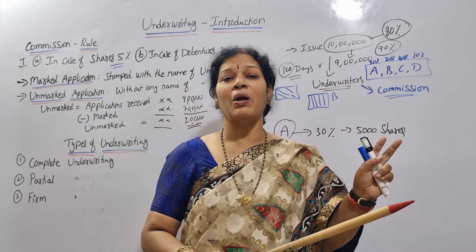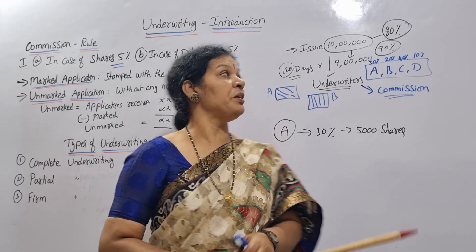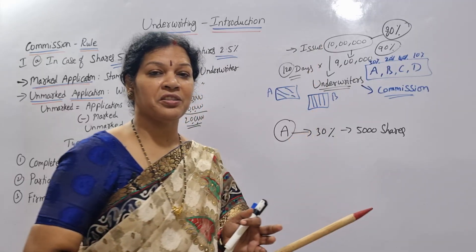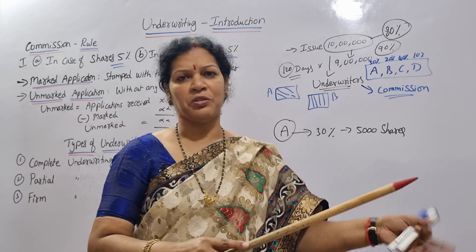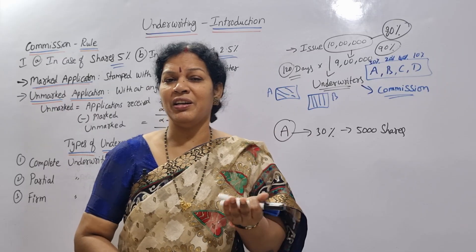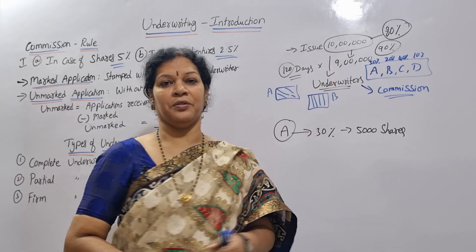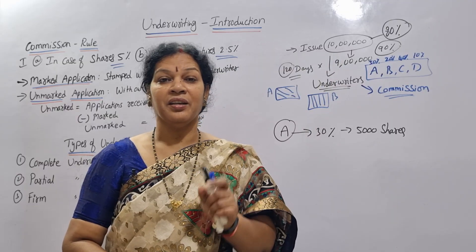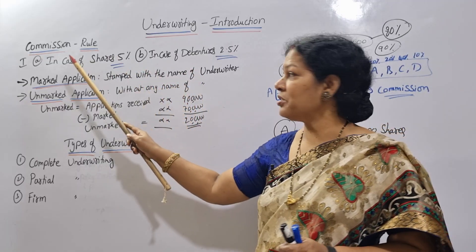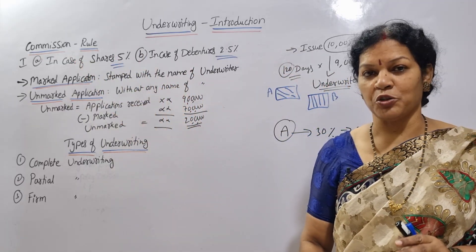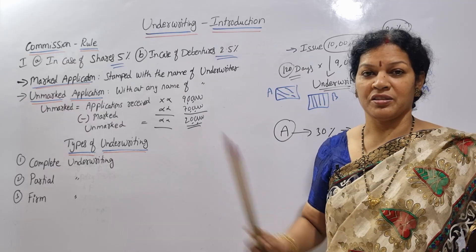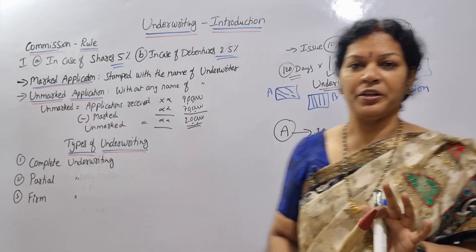The company arranges mediators called underwriters. They guarantee to subscribe up to 10 lakhs. In return, they get commissions. As per SEBI rules, underwriters get a 5% commission on shares and 2.5% commission on debentures — not more than this. That is why underwriters are willing to do it.